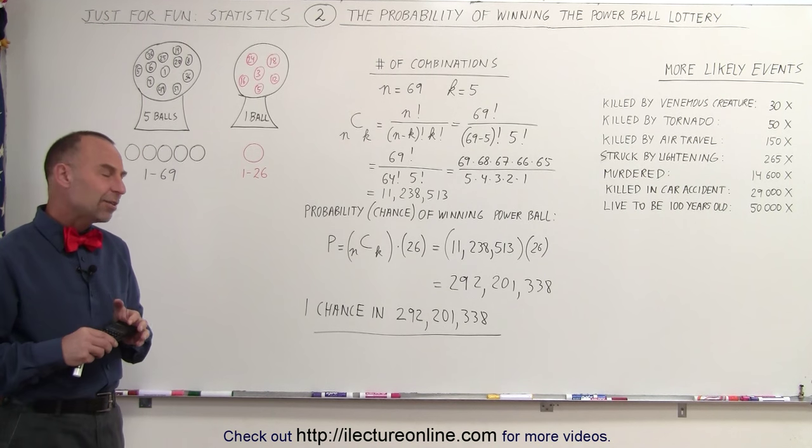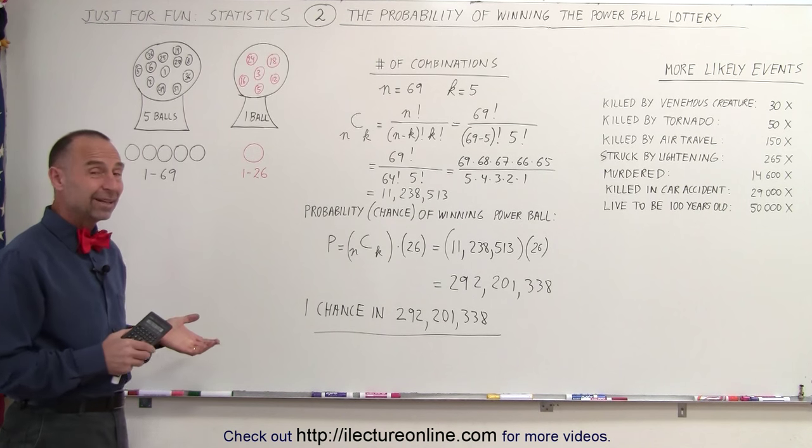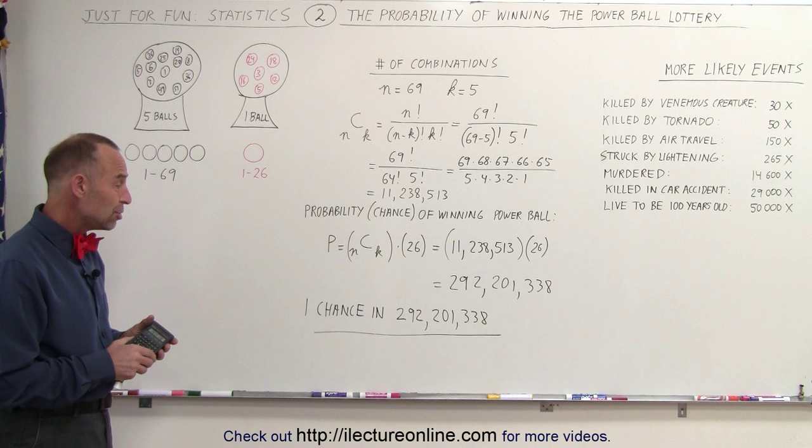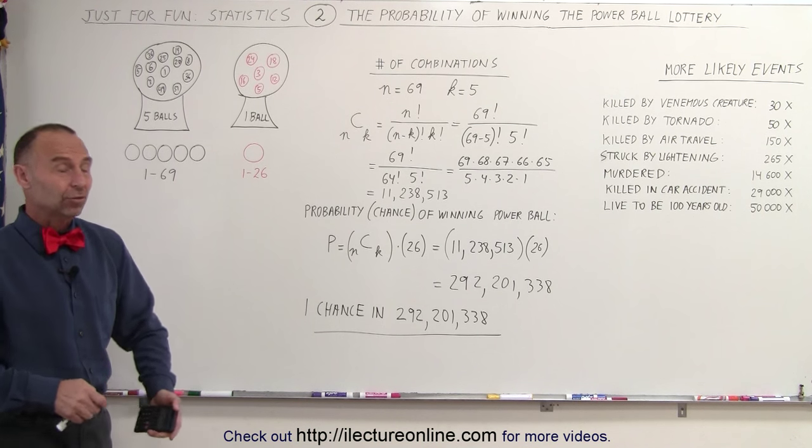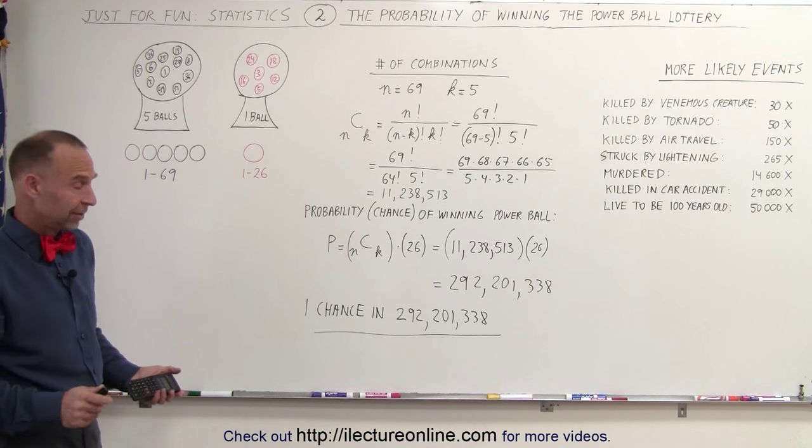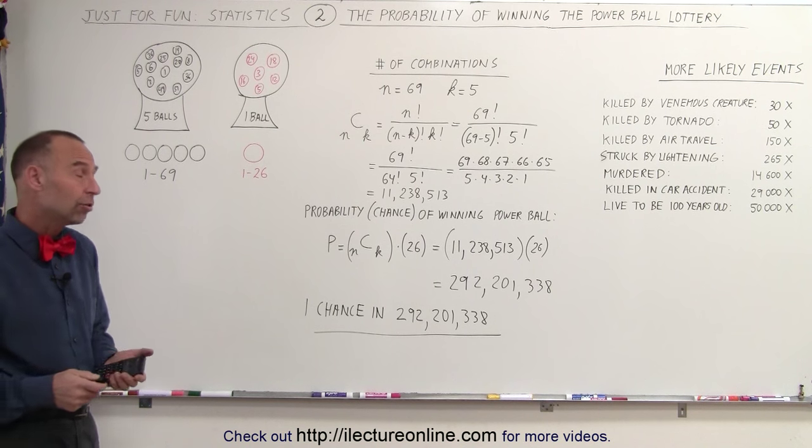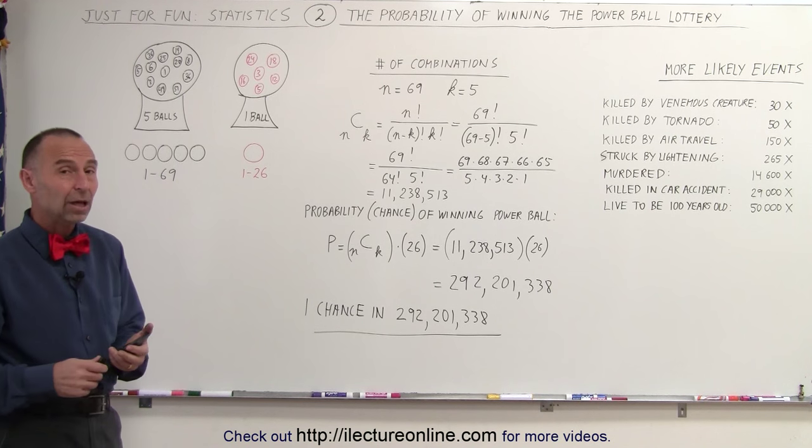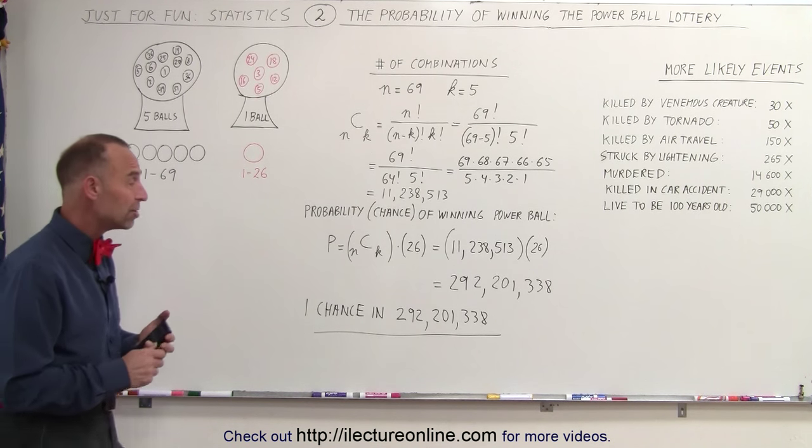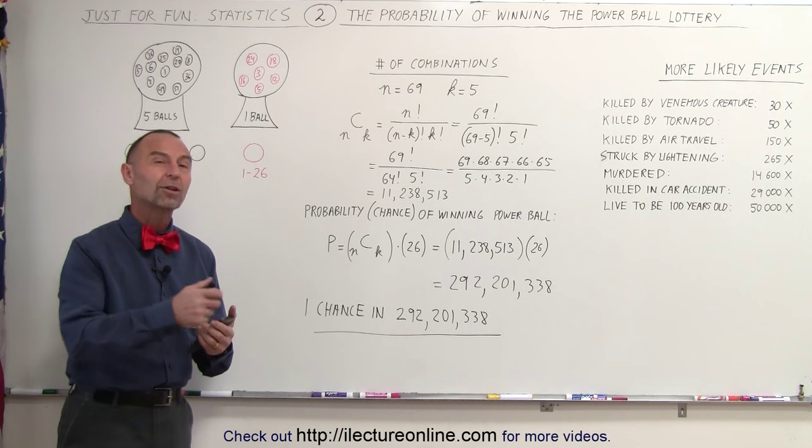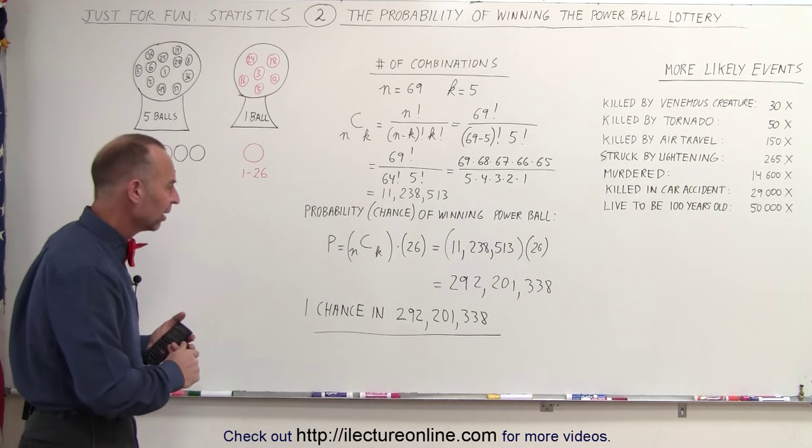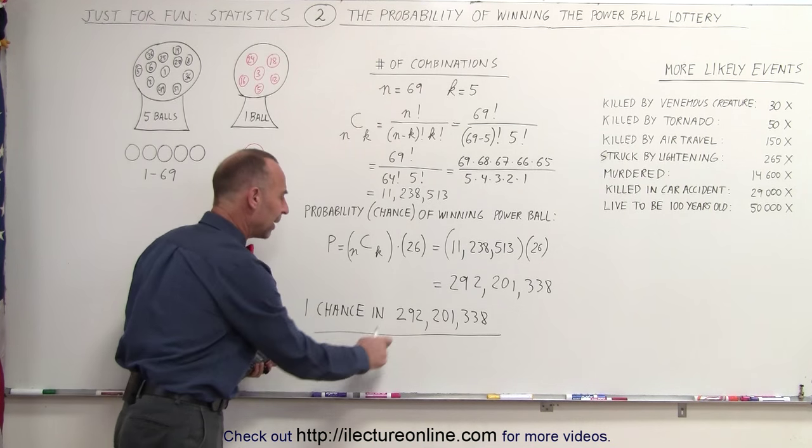Well, if you think your chance of winning the lottery with one ticket is not very good, maybe you think that you can buy two tickets, three tickets, five tickets, ten tickets, and increase your chances. Well, you could, but let's see how much of a difference that would make. So let's say you spend $4.00 and buy two tickets. Then what you need to do is divide this number by two.